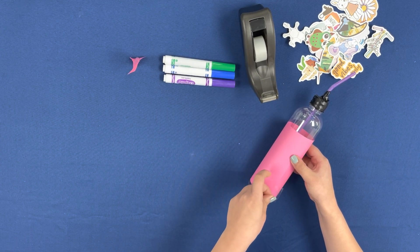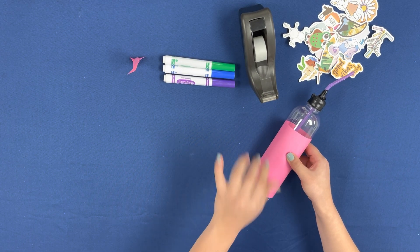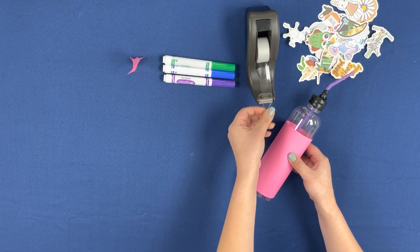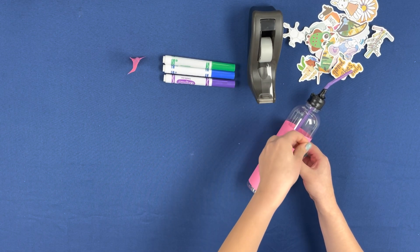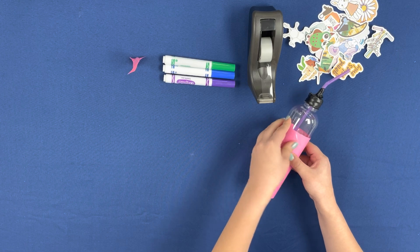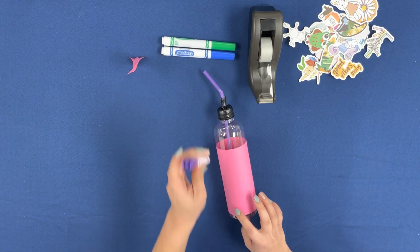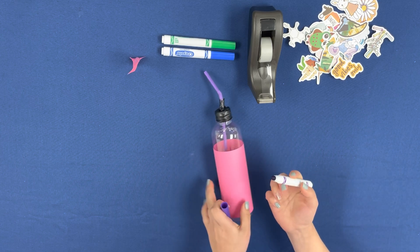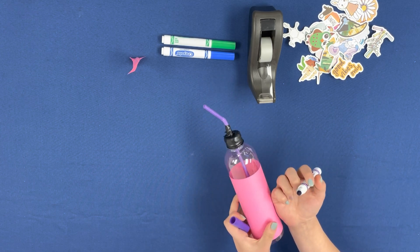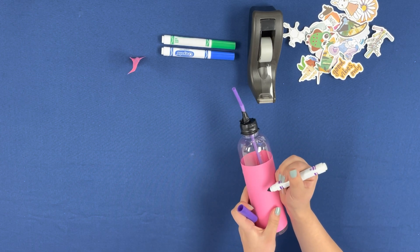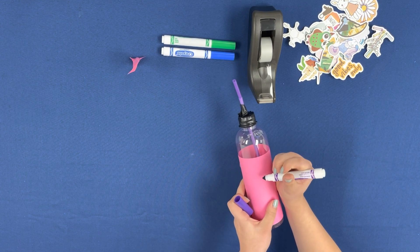Then, using tape, you are going to secure this construction paper onto your bottle. Now, you can decorate this construction paper however you want. I'm going to use the markers to write some fun things on there.